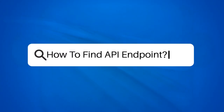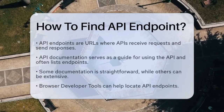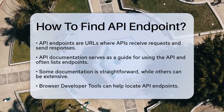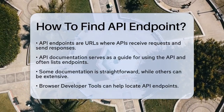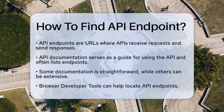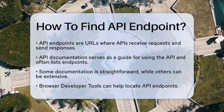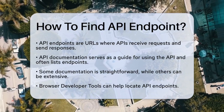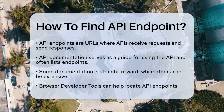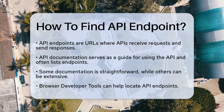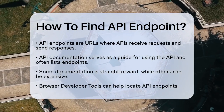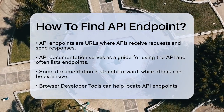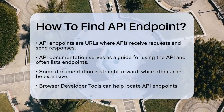How to find an API endpoint? Have you ever wondered how to uncover the hidden paths that APIs use to communicate? Finding an API endpoint can seem like a mystery, but it's actually quite straightforward once you know where to look. First, let's start with the basics. An API endpoint is essentially a URL where an API receives requests and sends back responses. To find these endpoints, you need to dig into the API documentation — this documentation is like a map that guides you through how to use the API.